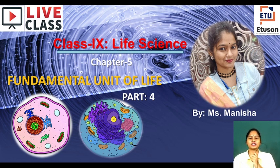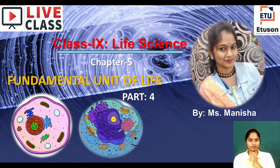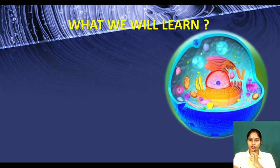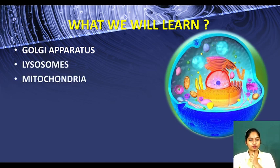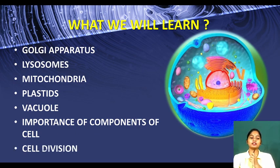Let me remind you what we studied in our previous classes. We studied about endoplasmic reticulum. There are two types: rough endoplasmic reticulum and smooth endoplasmic reticulum. They are named rough ER because they are attached with ribosomes. Today we will be discussing the rest of the cell organelles: Golgi apparatus, lysosomes, mitochondria, plastids, and vacuoles. We will also cover the importance of cell components and cell division.